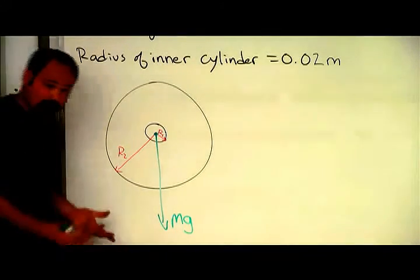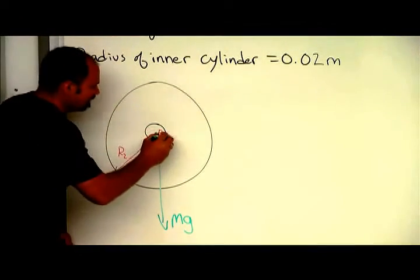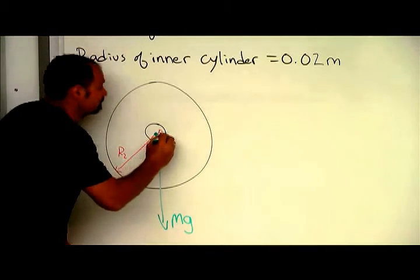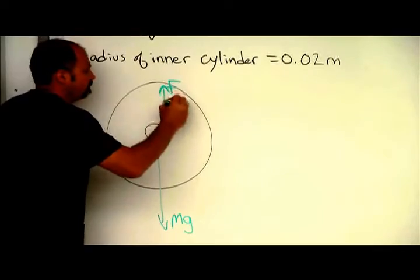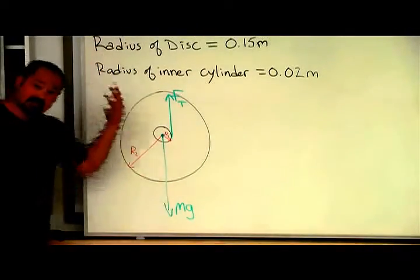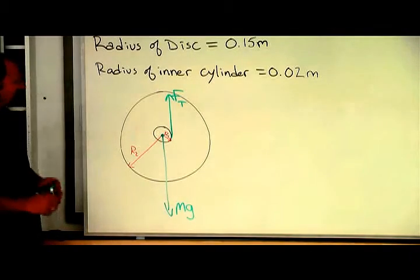And then the tension force acts right here where the string is attached, and that points straight up. And I have the tension force smaller than the force of gravity, since it is accelerating downward.